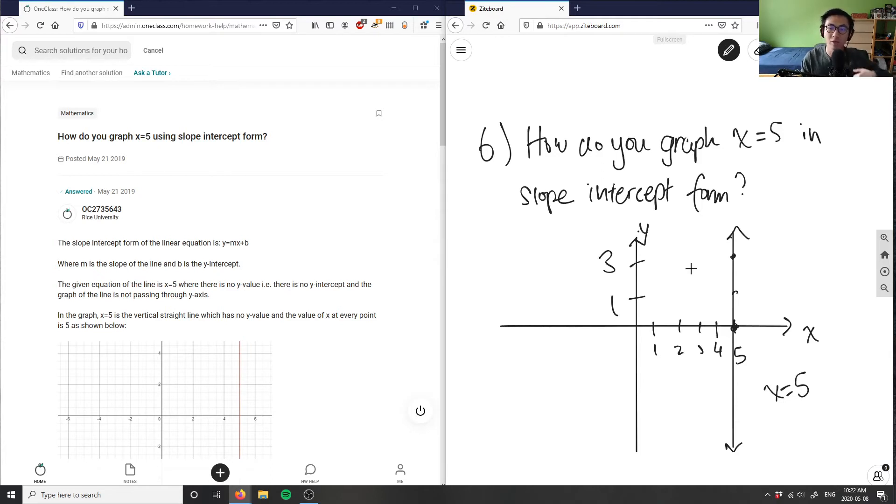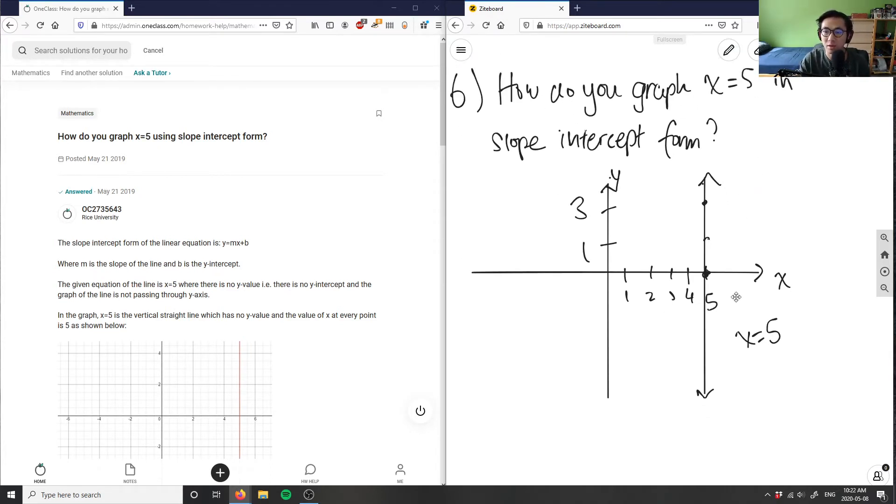So it doesn't matter if my value is one or three or something like that. It's always going to equal five here, so it makes a vertical line here. When we're talking about slope-intercept form, also we can see here that we have an x-intercept here equals five, right? It hits the x-intercept at x equals five.